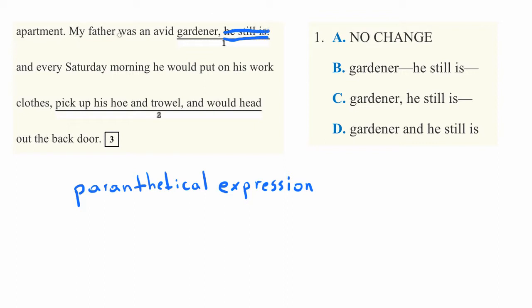We read, my father was an avid gardener and every Saturday morning he would put on his work clothes, pick up his hoe and trowel, and would head out the back door. Still a complete sentence, even without this information that tells us that he still is a gardener.